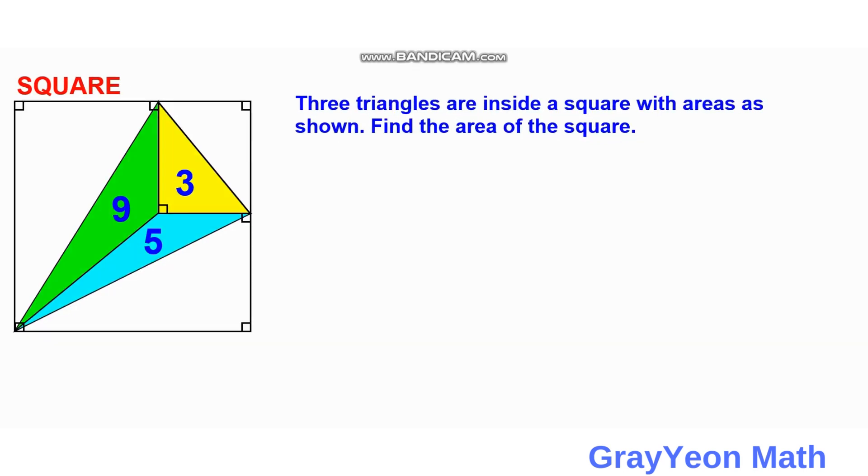Okay, so first thing that we need to do is we can notice that this green triangle has an area of 9 and one of its sides is this and its height can be this height. So we can redraw that triangle to be like this. This is now the new green triangle.